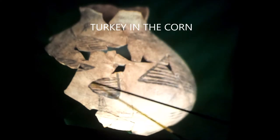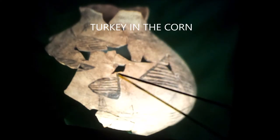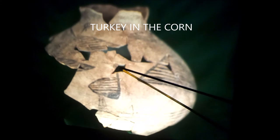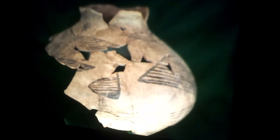And this corn olla also has a turkey. There's his body. There's his feet. And his head is missing because of this absent sherd. And there's a little turkey in the corn. We see turkeys occasionally on the pottery.